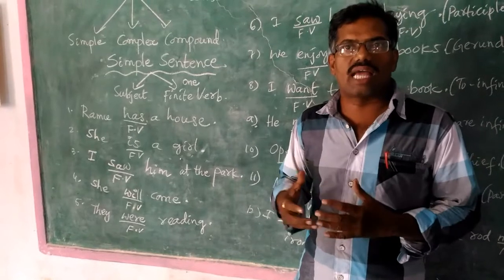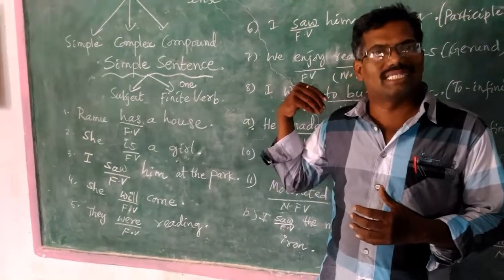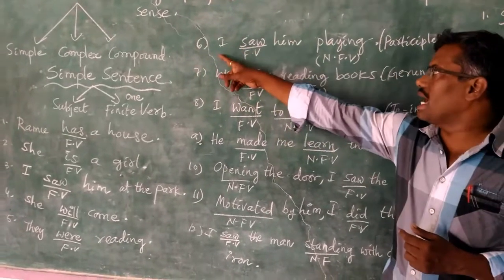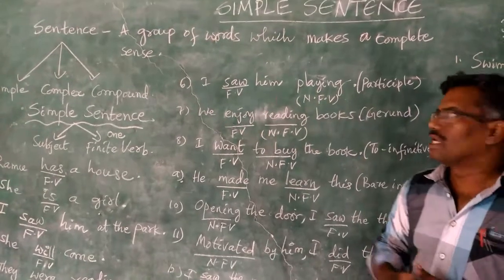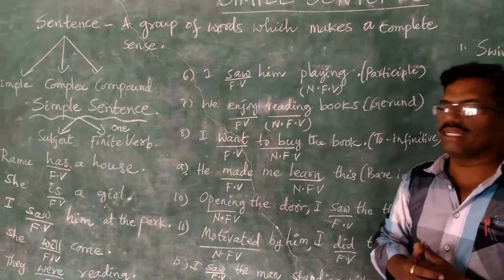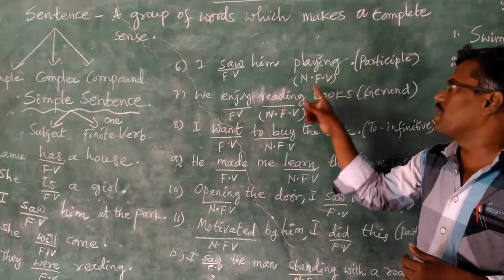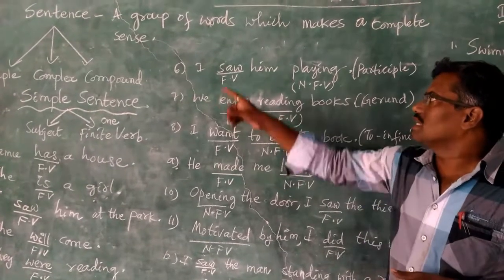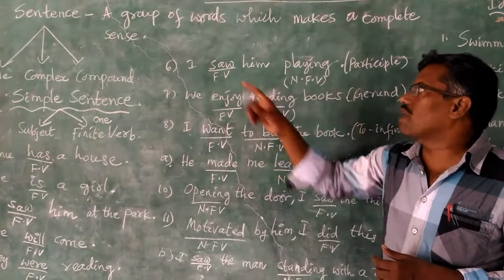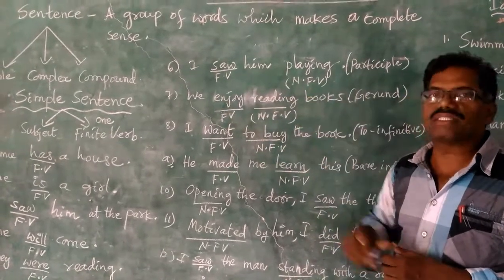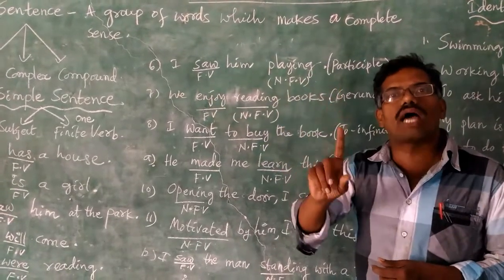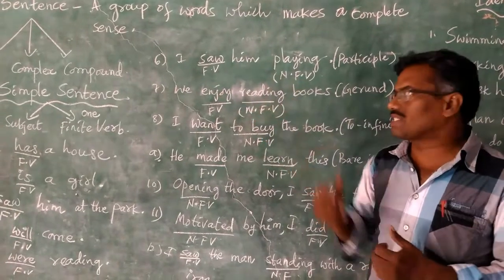We can have this concept in a clearer way with more examples. Look at example 6: 'I saw him playing.' Here, two verb forms are there — 'saw' and 'playing.' 'Saw' is the finite verb, whereas 'playing' is the non-finite verb. Even if the sentence has two verb forms, only one is finite. So it is called a simple sentence.